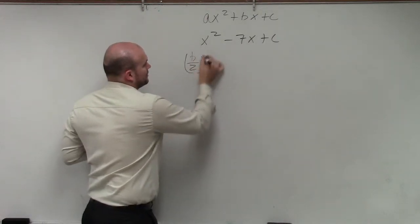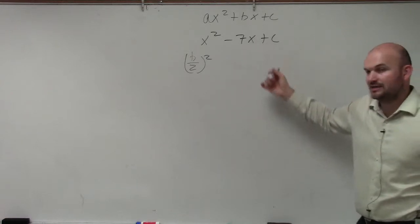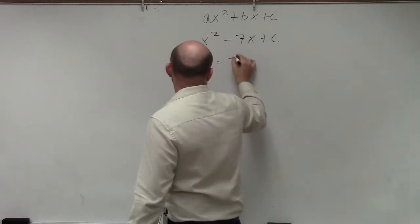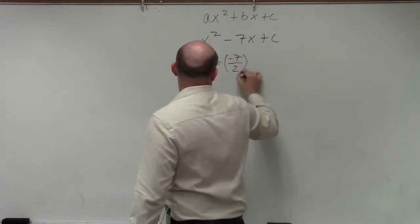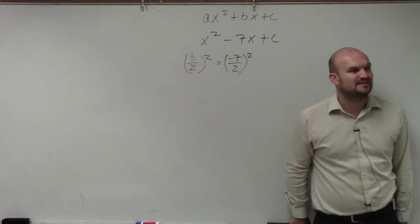b divided by 2 squared. In this case, my b is negative 7, and I got to divide that by 2 and square it. So I take negative 7 divided by 2 and square it. However, in this case, 2 does not evenly divide into negative 7, does it?